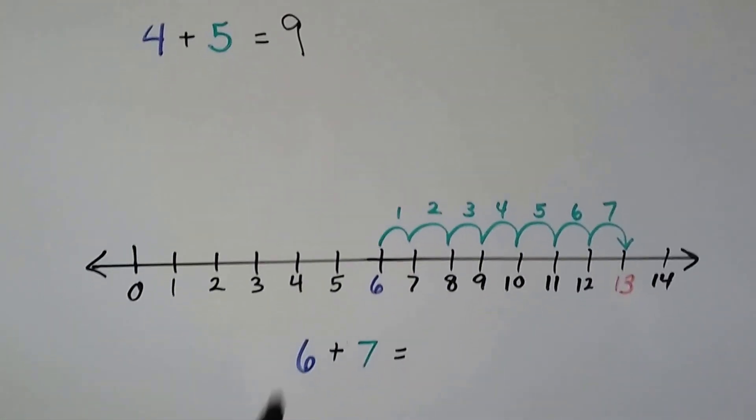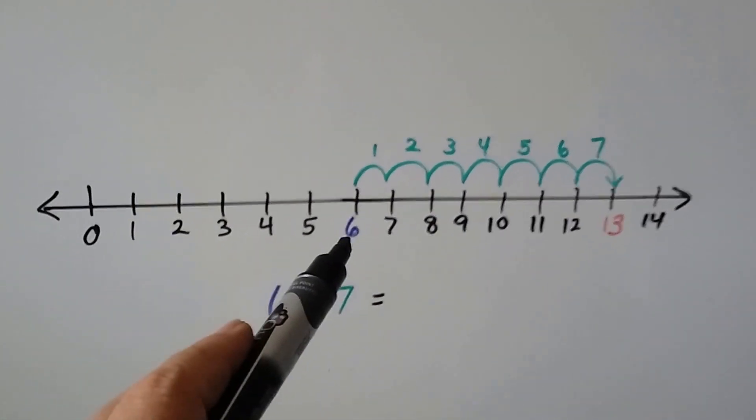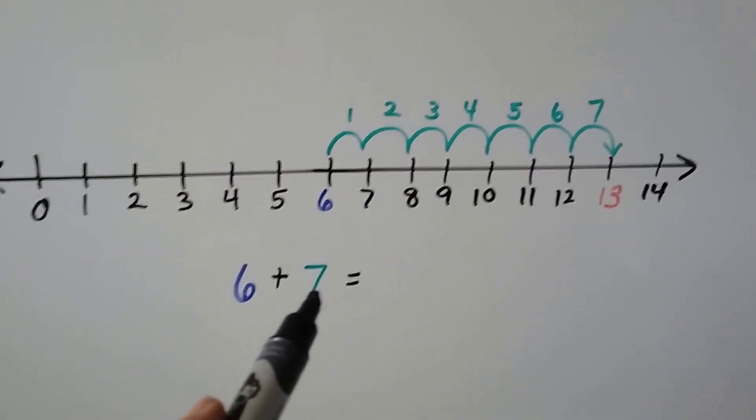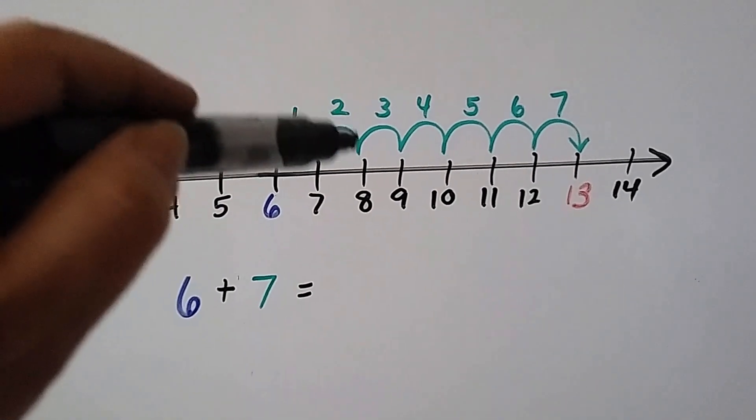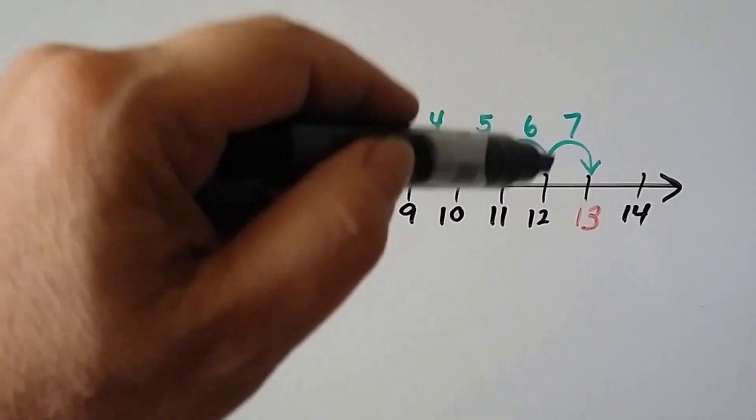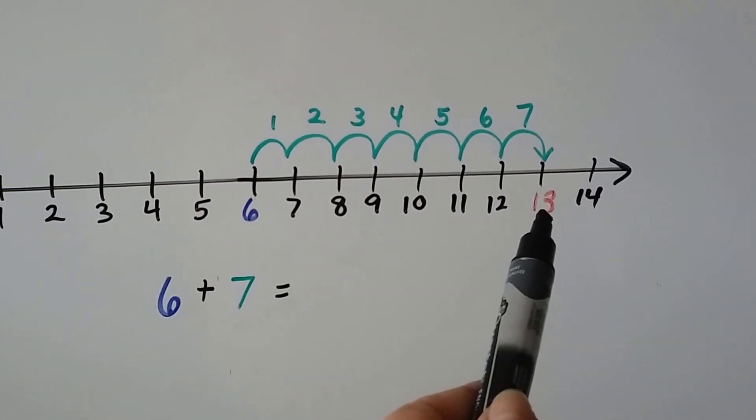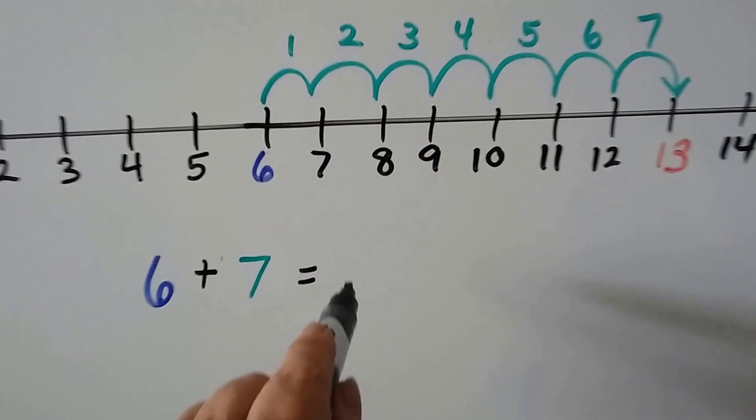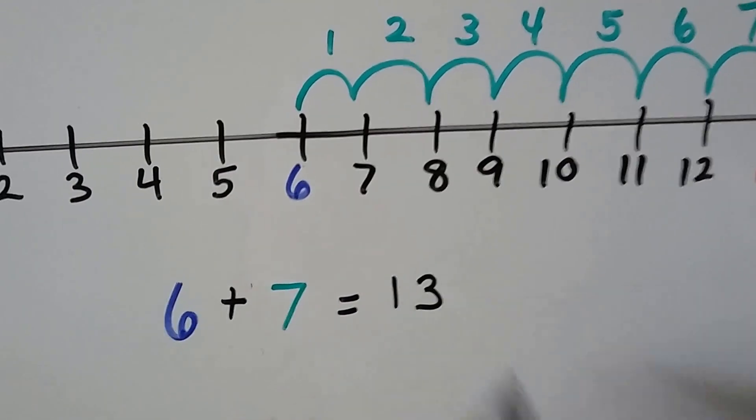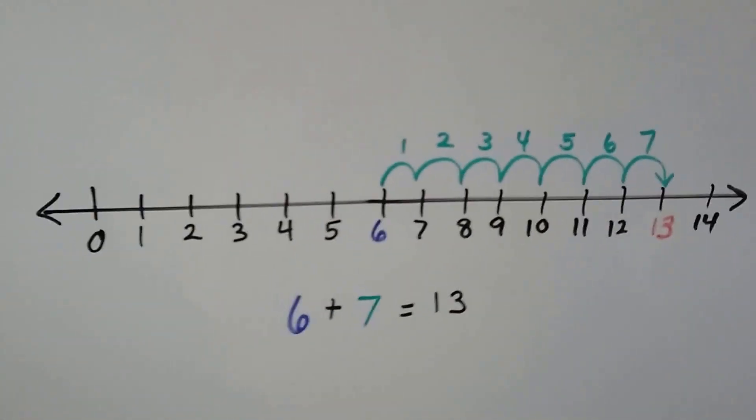Let's try that again. We have 6 plus 7. We find the 6 on the number line and we're going to do 7 hops: 1, 2, 3, 4, 5, 6, 7 hops. And that brings us to the 13, so we know 6 plus 7 is 13. That's how we can use a number line to add.